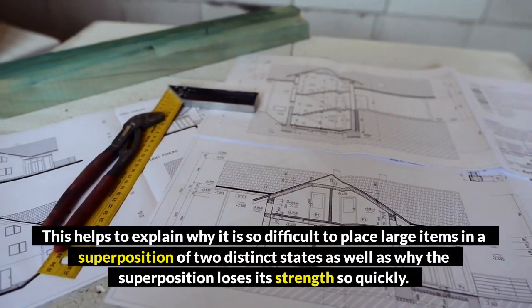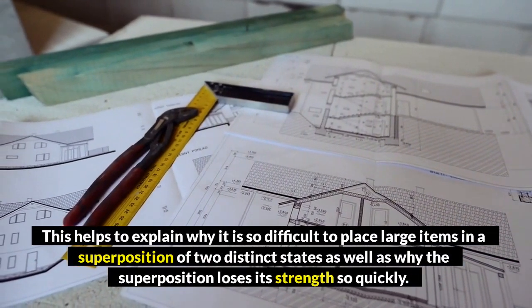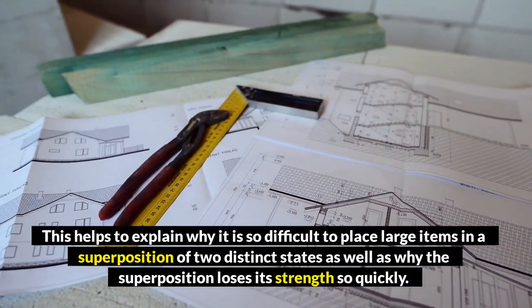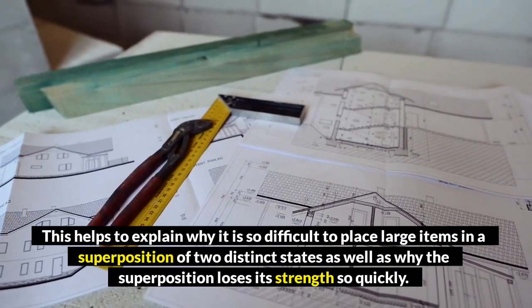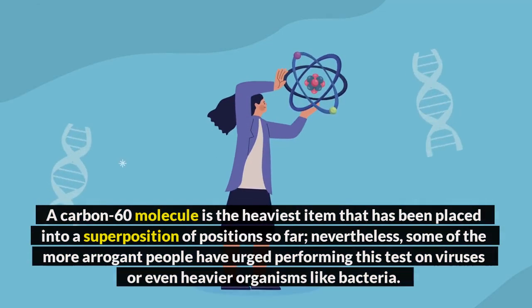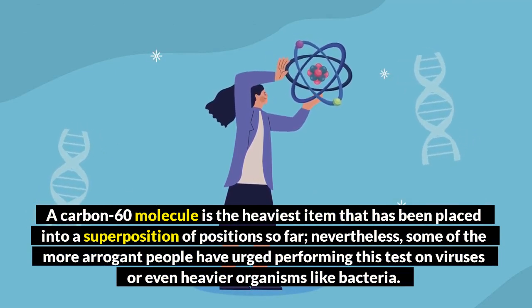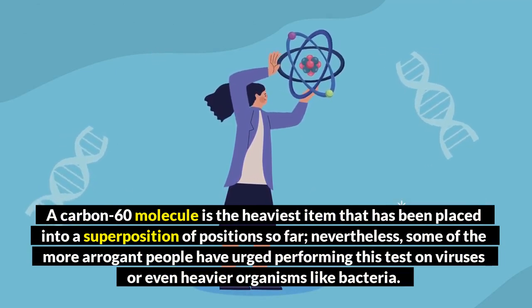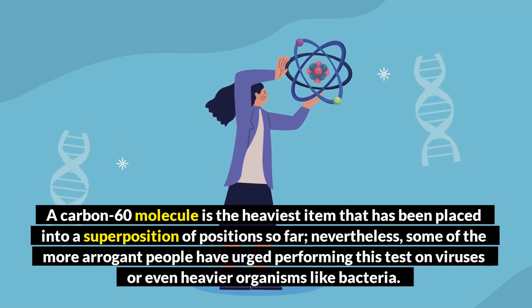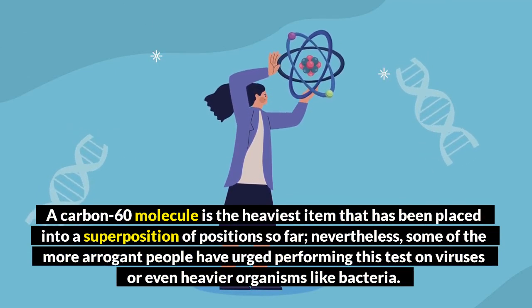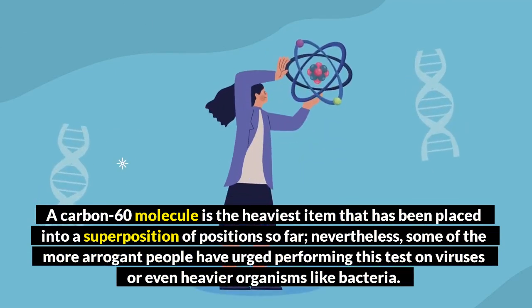This helps to explain why it is so difficult to place large objects in a superposition of two distinct states as well as why the superposition loses its strength so quickly. A carbon-60 molecule is the heaviest object that has been placed into a superposition of positions so far. Nevertheless, some of the more arrogant people have urged performing this test on viruses or even heavier organisms like bacteria.